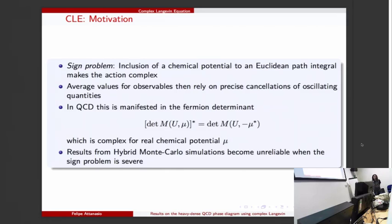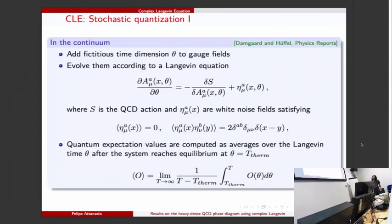A brief introduction to stochastic quantization, which is the basic thing on which complex Langevin was based on. We add a new fictitious dimension to the gauge fields and evolve those fields using a Langevin equation. S is the action, eta is a white noise field satisfying these properties here.